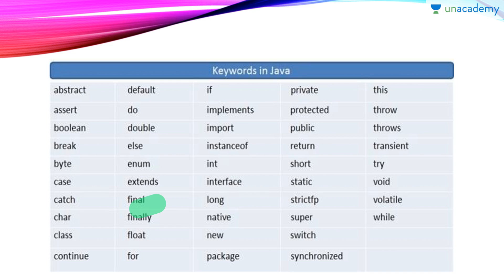Now let's see what are the new keywords in Java. Abstract is a new keyword. As you have seen in C and C++ we use pure virtual functions, and whatever class has a pure virtual function becomes an abstract class. But in Java there is nothing like pure virtual functions, so to declare any class as an abstract class we have to mention the abstract keyword.